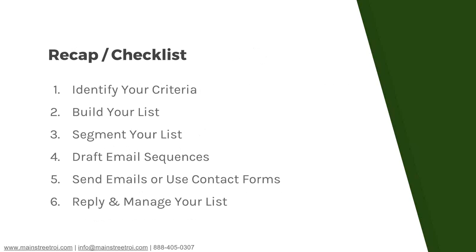Here's the checklist of what we walked through: step one, identify your criteria; step two, build your list — either research it or buy it; step three, segment your list; step four, draft email sequences for each segment; step five, send those emails or use contact forms; step six, reply to responses and keep your list updated.